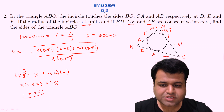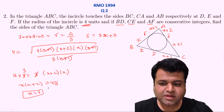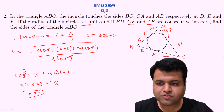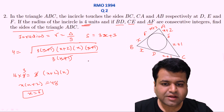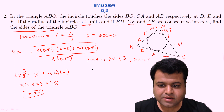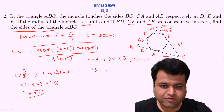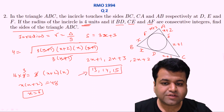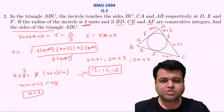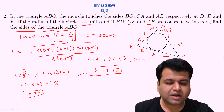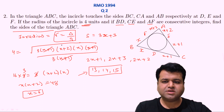Solving the quadratic X(X+2) = 48 gives one positive value: X = 6 (since 6 × 8 = 48). The sides of the triangle are 2X+1 = 13, 2X+3 = 15, and 2X+2 = 14. So the sides are 13, 14, and 15. These are consecutive integers, consistent with the problem. All you need to know is the inradius formula r = Δ/S and Heron's formula.